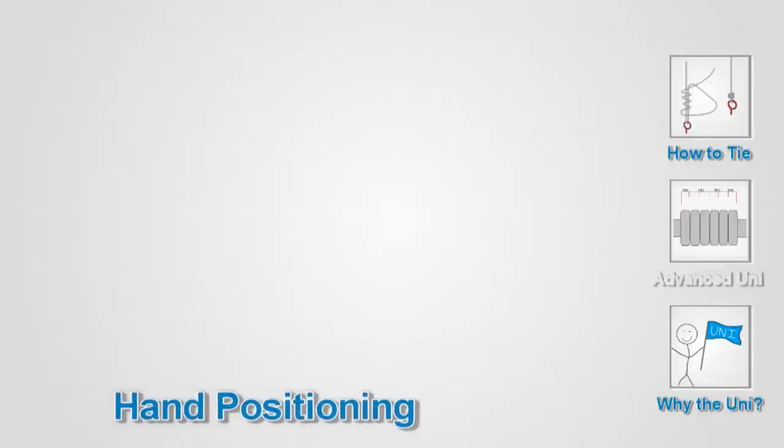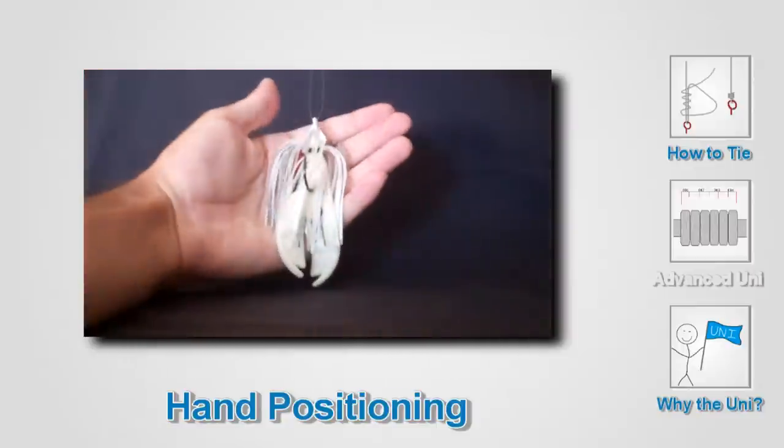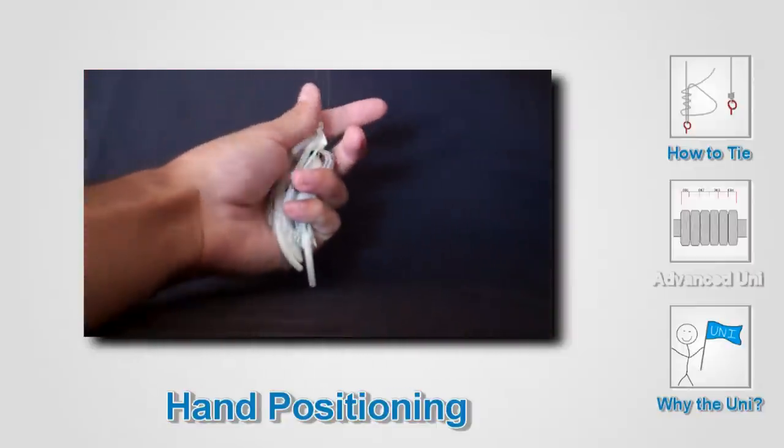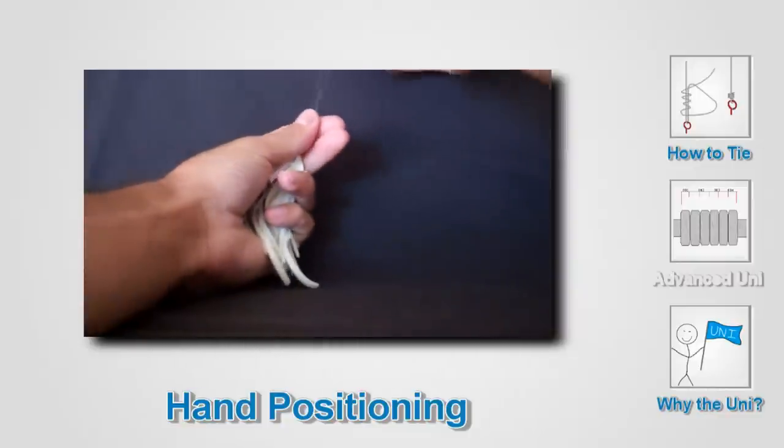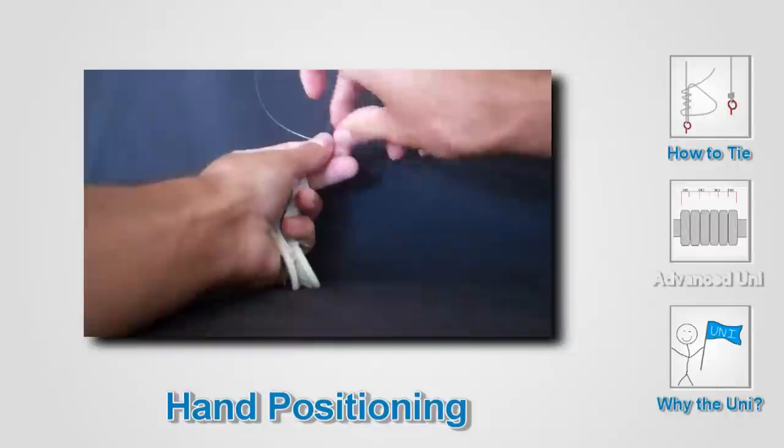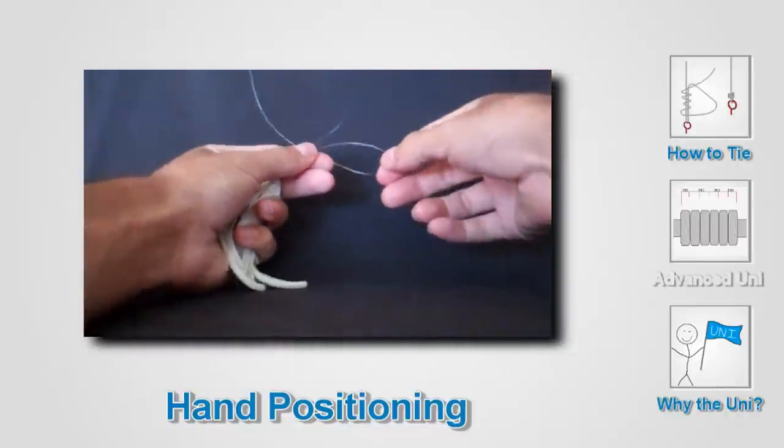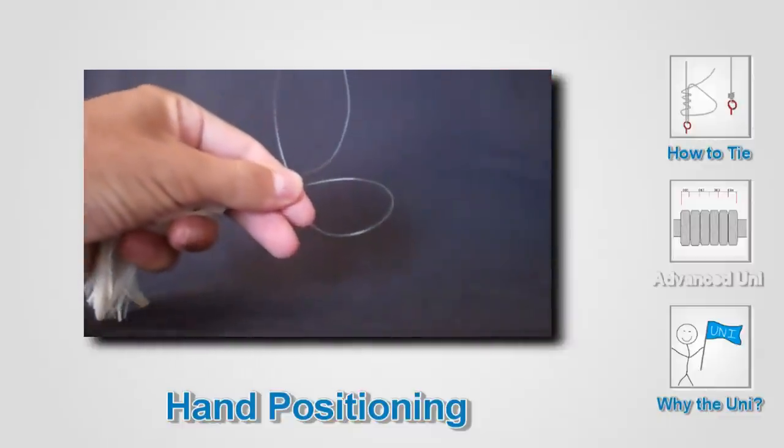The Uni Knot is a pretty easy knot to tie once you get used to the hand positioning. Now here's how I hold it. I place the bait or the hook in the palm of my left hand, leaving my thumb and index finger free. That allows me to pinch the lines when I make my loop. Then I use my right hand to do the wraps.